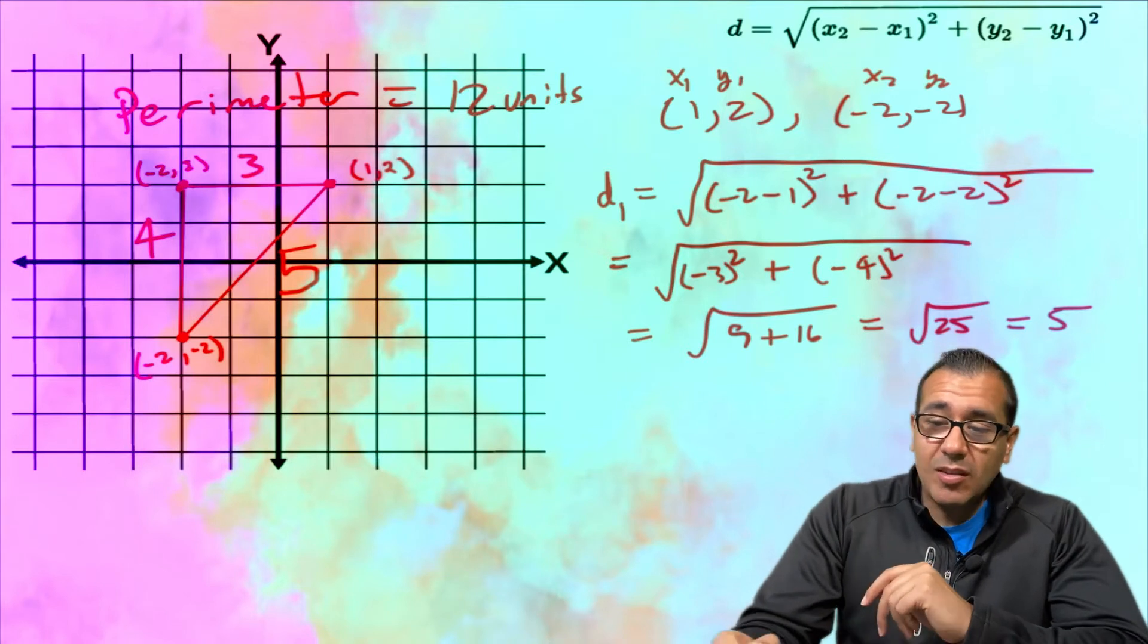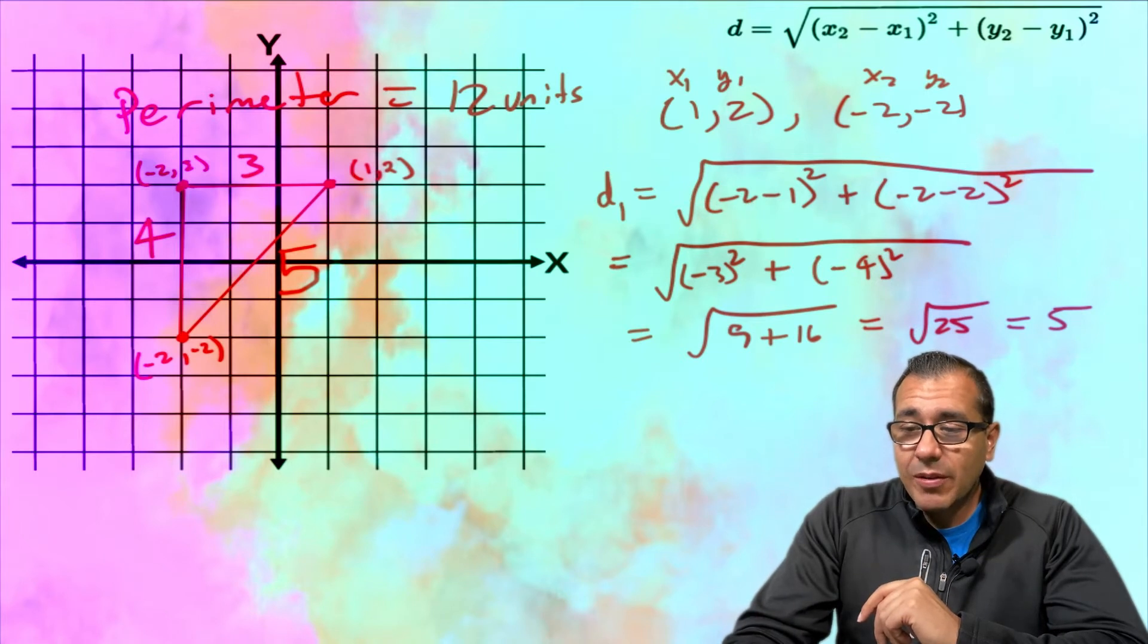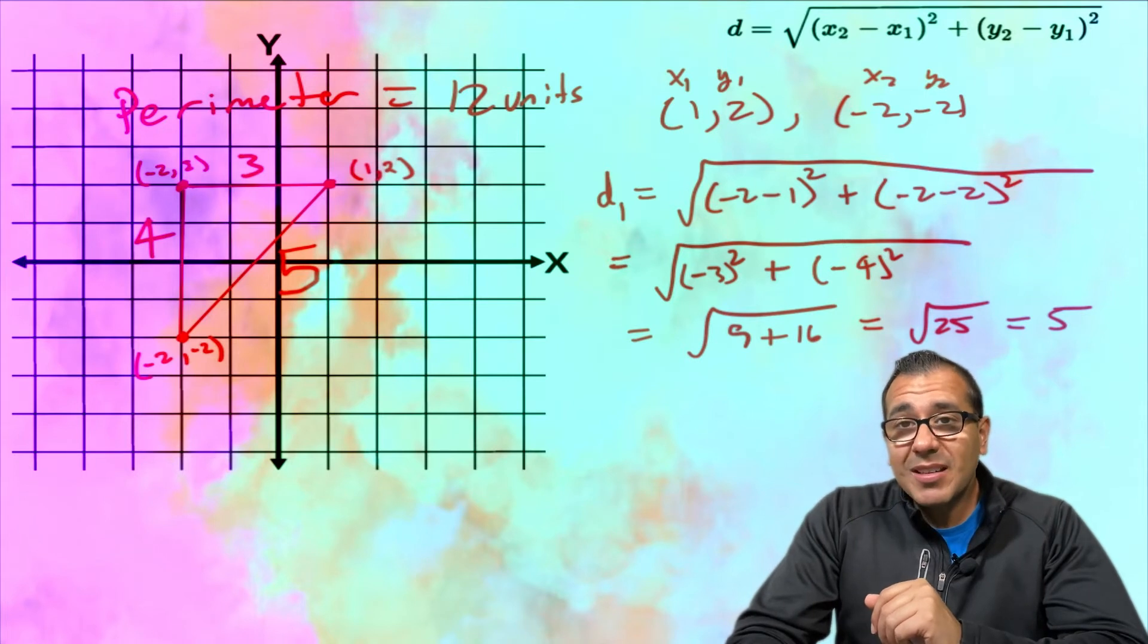And so what I do is I plug them into my formula. So wherever I see x2 I'm plugging in -2, wherever I see x1 I'm plugging in 1, and just be careful with your signs because a lot of people make that mistake with their signs.